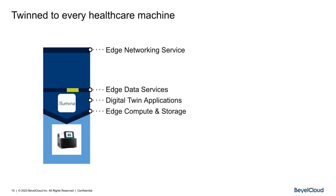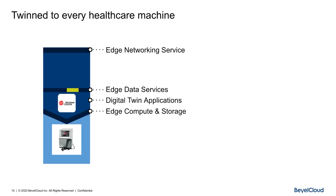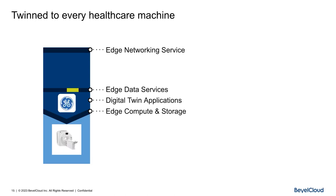On top of this, there is a specific category of application we call digital twins, designed to replicate the data in the machine. Replicate means: the static data (serial number), the environmental data (where it's located), the dynamic data (last error code, laser power level of the gene sequencer), and the NOMIC data — the actual echocardiogram, gene sequence, blood analysis, MRI image, etc.